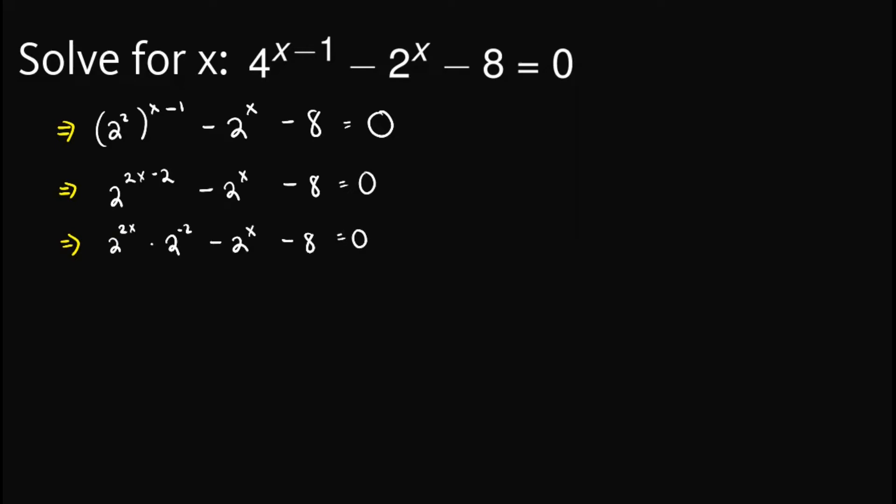So from here, again from laws of exponents, we can write this one as 2 raised to x squared. So, inputting the remaining terms, we have times 2 raised to negative 2 is simply 1 over 2 squared. And then, we have minus 2 raised to x minus 8 equals 0.